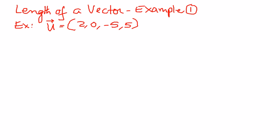The way to do that is as follows. Step number 1. The length of vector u is represented as a vector like that, and then two lines on either side, is equal to...